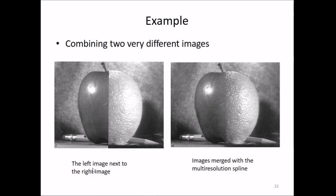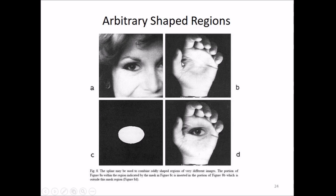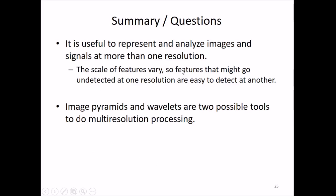This is the example—we have combined two very different images, the left image next to the right image. This is the image merged with the multi-resolution spline; you can see the differences. Mosaicing is one example, but we can also apply it to arbitrary shaped regions. This is an eye, this is a hand—if I want to put this eye on this hand, I can do it. It's useful to represent and analyze images and signals at more than one resolution. Features that might go undetected at one resolution are easy to detect at another. Image pyramids and wavelets are two possible tools to do multiple resolution. This was on multi-resolution.